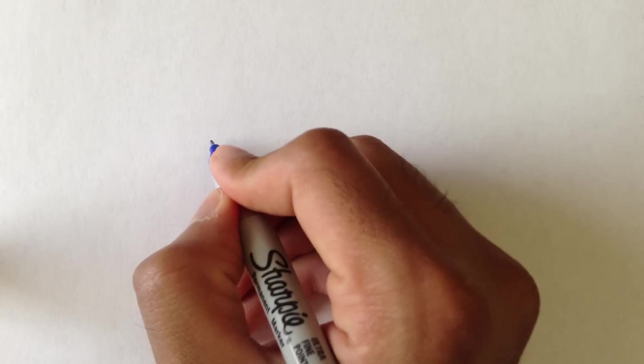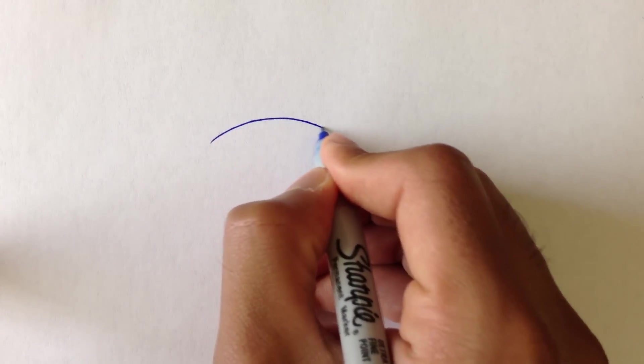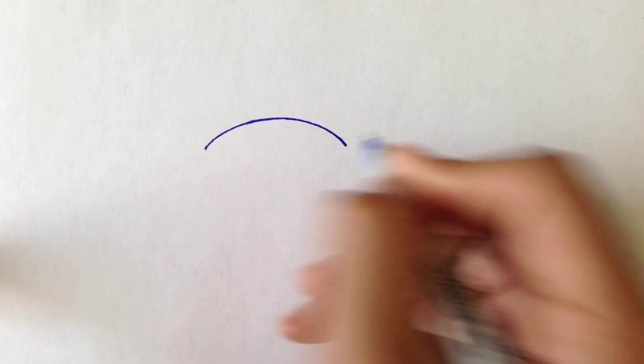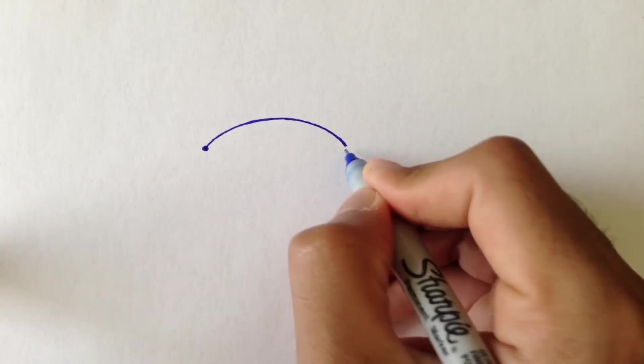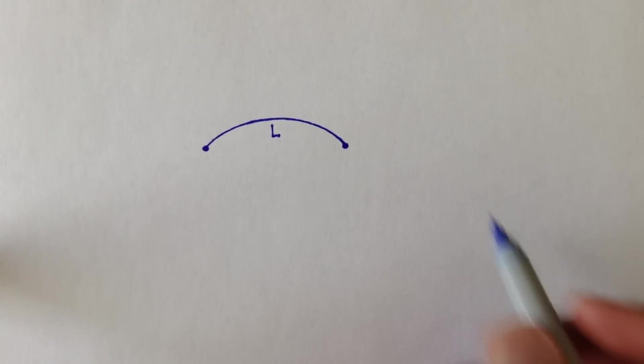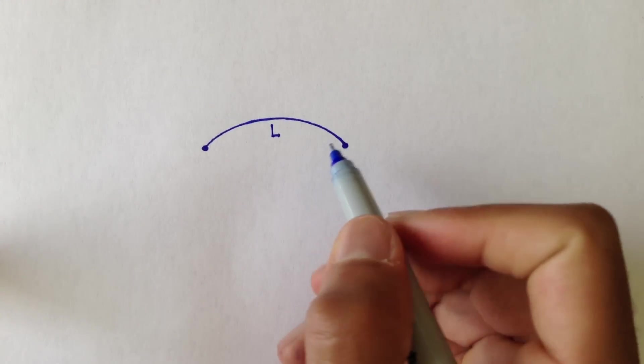So, let's say we have this blue smooth curve. It started here, and it ended here. I'm going to call this L. L stands for the length of this smooth blue curve.